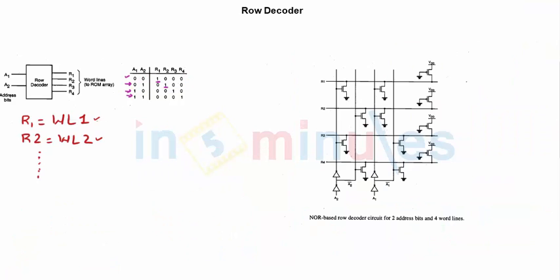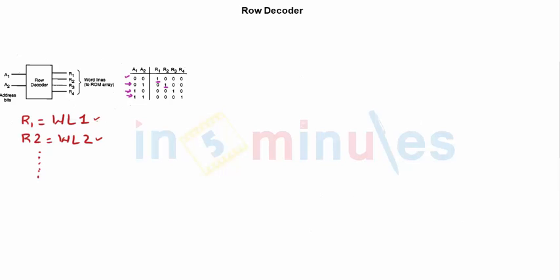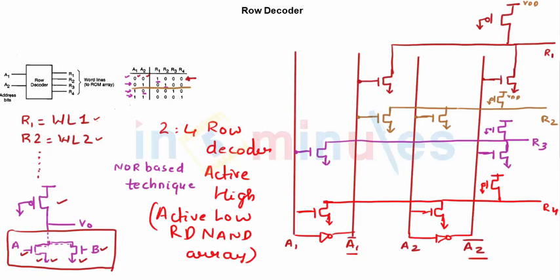I have drawn that entire circuit in fair here just for your understanding. This is a NOR-based decoder circuit for two address bits and four word lines. You can see this is exactly the same—it looks much more symmetric because I have already drawn it and kept it ready, but it's exactly the same what I have drawn here.